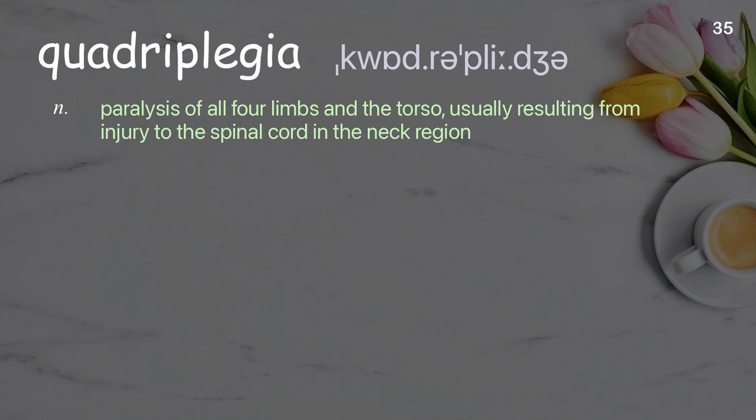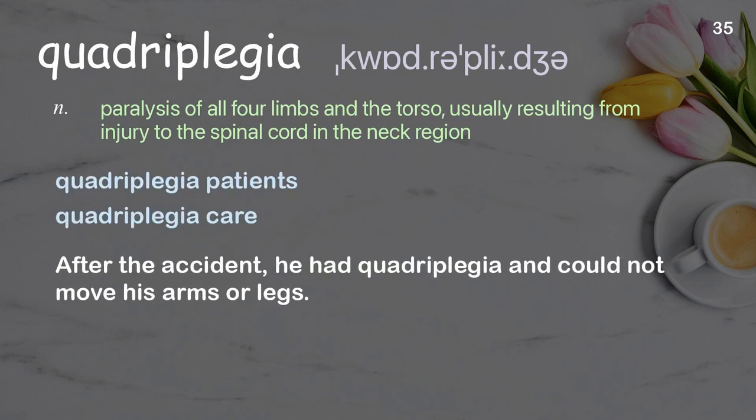Quadriplegia: paralysis of all four limbs and the torso, usually resulting from injury to the spinal cord in the neck region. Examples: quadriplegia patients, quadriplegia care. After the accident, he had quadriplegia and could not move his arms or legs.